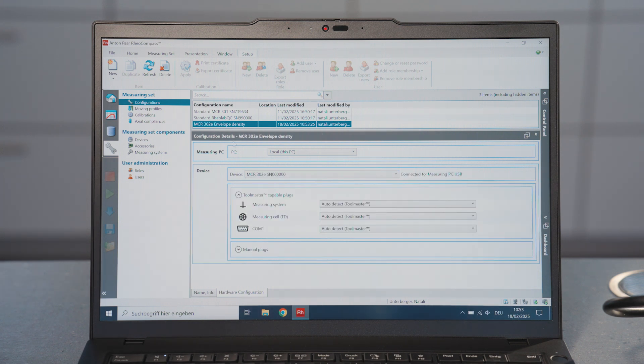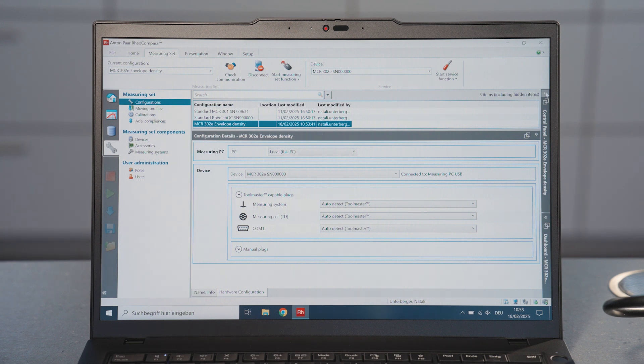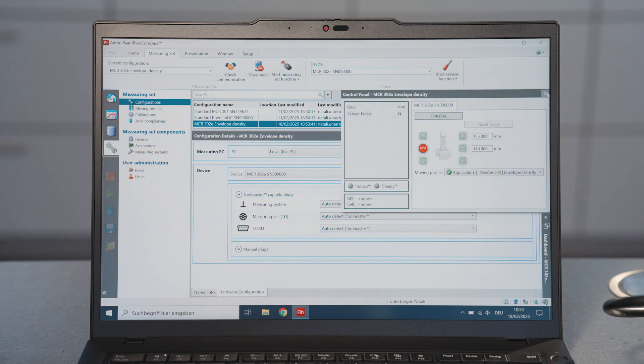To apply the new configuration, select Measuring Set, then Current Configuration. Perform Instrument Initialization.